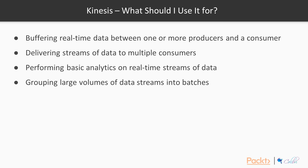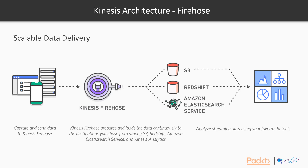Kinesis is useful in a number of scenarios. In this section we'll look at how to use it to buffer real-time data between multiple producers and a consumer. Kinesis can also route data to multiple consumers — up to five — perform simple analytics on real-time streams, and group large volumes of data streams into batches for batch-based delivery.